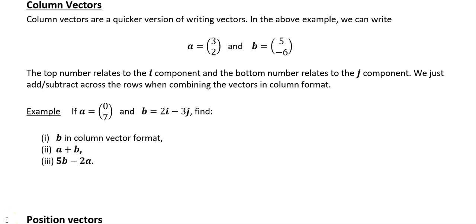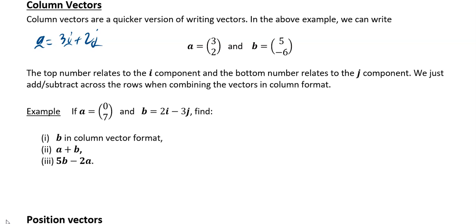In this video, we're going to look at column vectors, position vectors, direction of vectors, and the magnitude of vectors. Column vectors are basically a quicker way of writing a vector. So if we had a, which is equal to 3i plus 2j, we could write that as the column vector (3, 2). Likewise, (5, -6) would be the same as 5i minus 6j. It's a much quicker and more efficient way of writing our vectors.